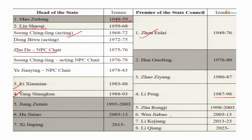Under Xi Jinping, Li Keqiang, who belonged to the faction of Hu Jintao, became the premier. But after 10 years he was replaced. The current premier of China is Li Qiang, recently elected in 2023.